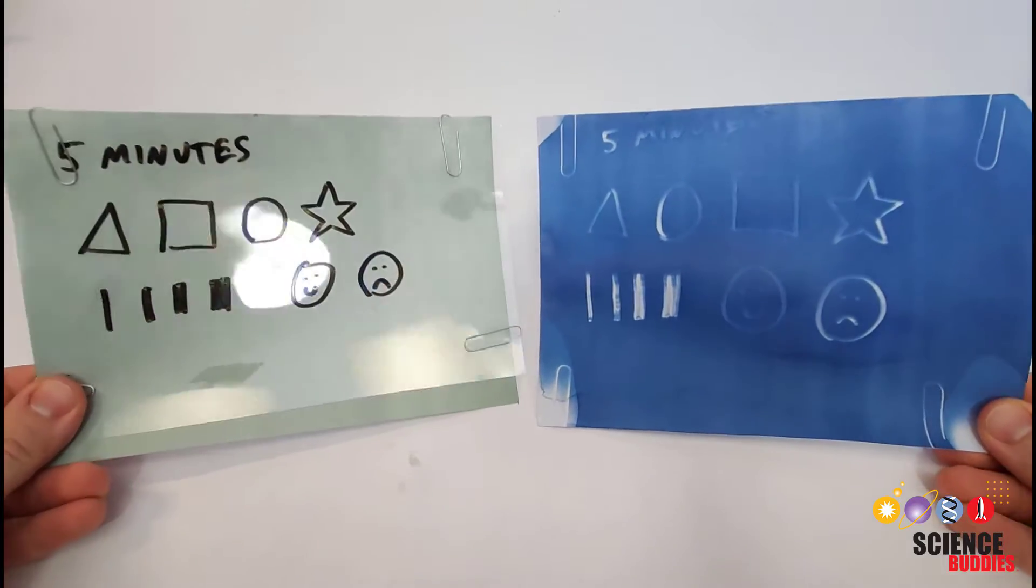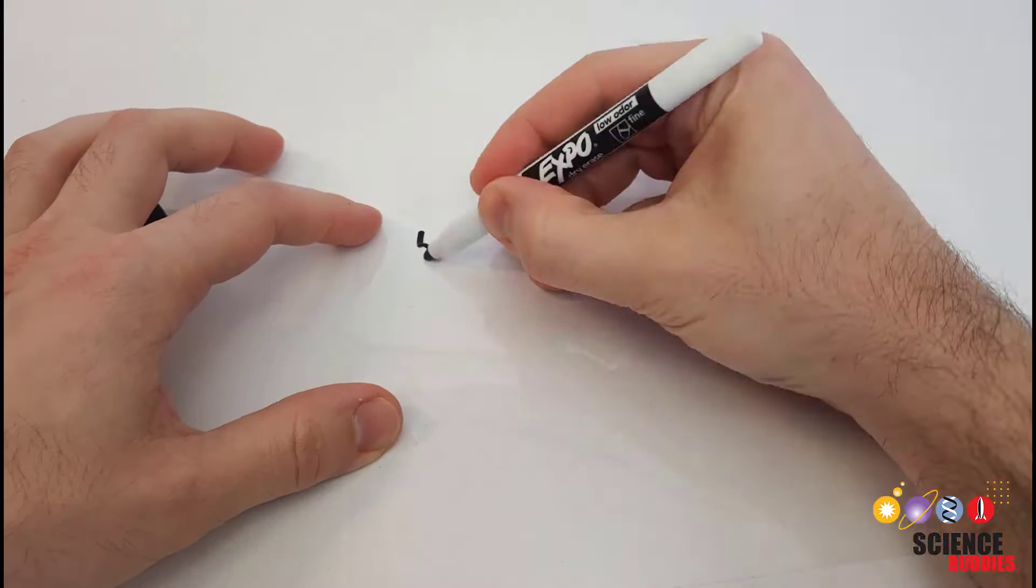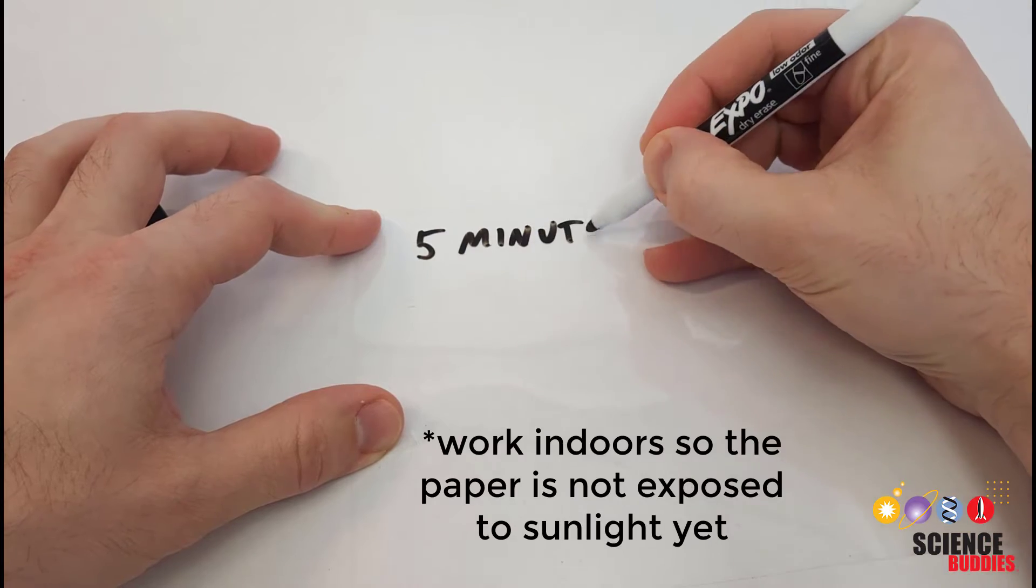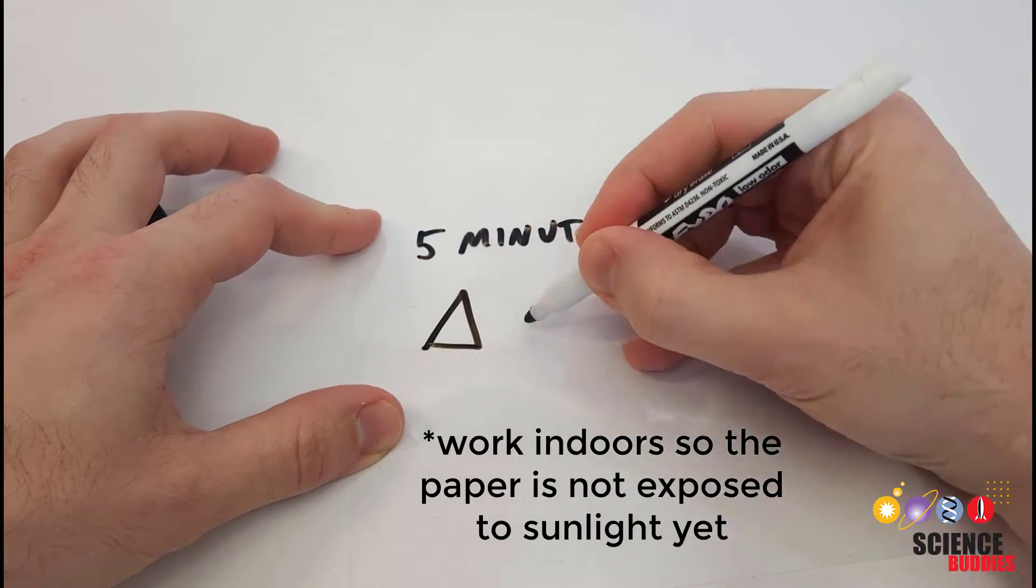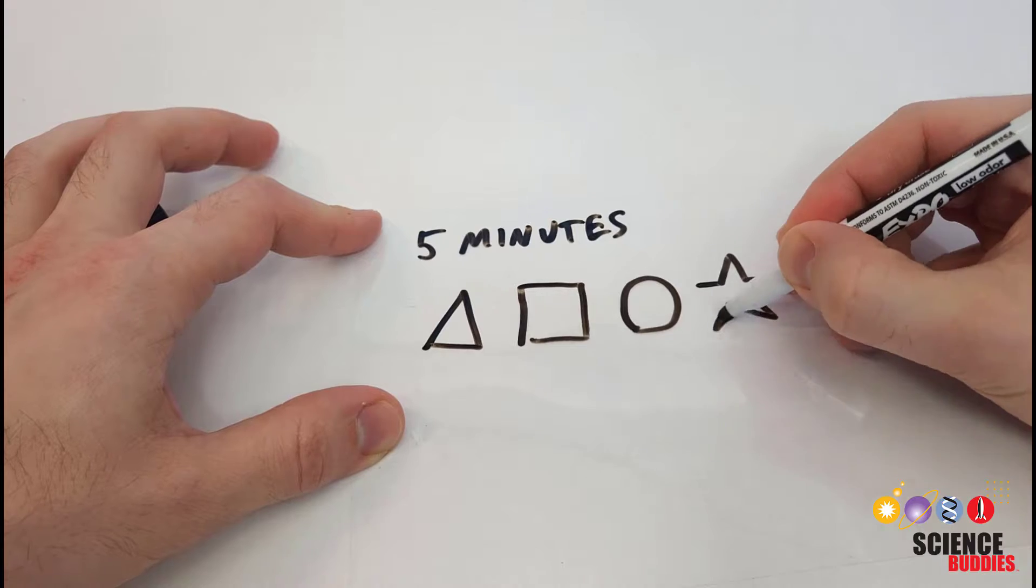Here's how you can do a science project with photosensitive paper. Use a dry erase marker to draw a design like shapes, lines of different thicknesses, and words on a transparency sheet.